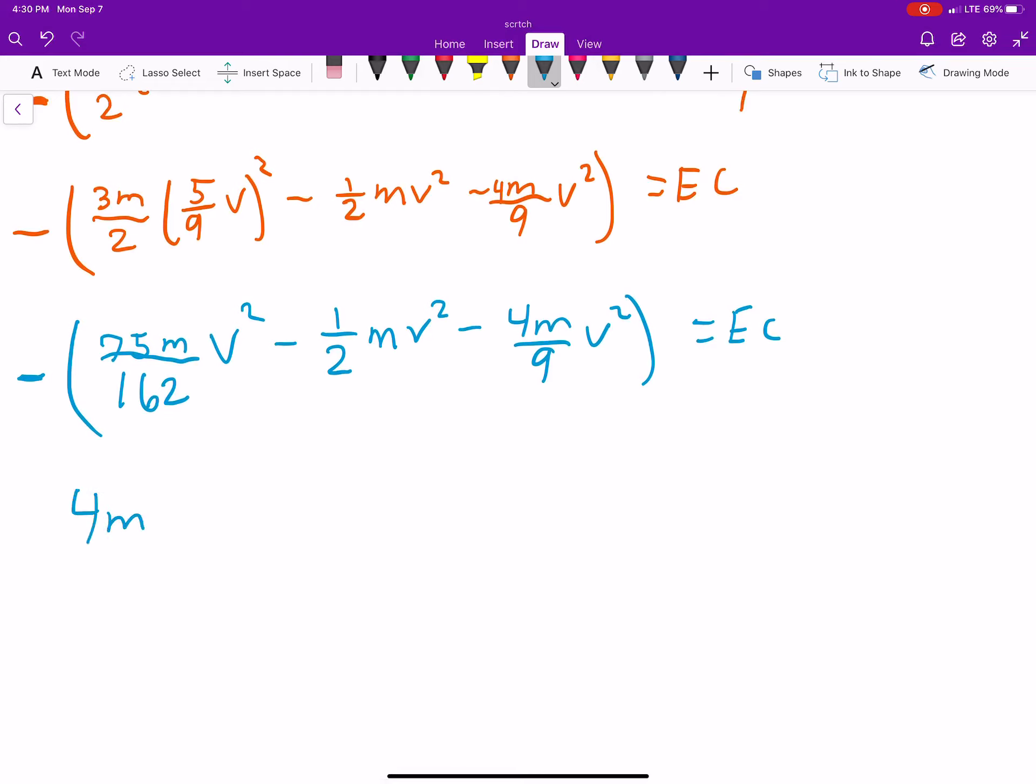And I'm just going to distribute the negative, so we get 4mv squared over 9, plus, mv squared over 2, minus, 75mv squared over 162, is your energy converted. Now, you can go ahead and get your common denominator. I'm just going to go ahead and add those guys up.